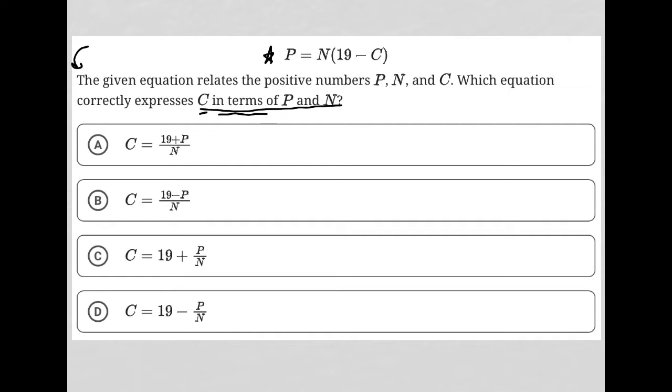C in terms of—this phrasing 'in terms of'—will always mean that you're just solving for C. So C equals something that has P and N involved on the right-hand side.